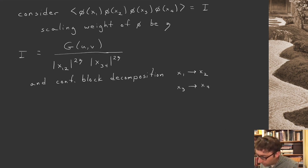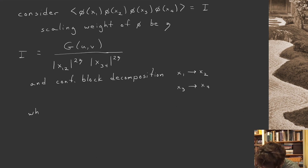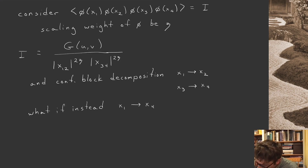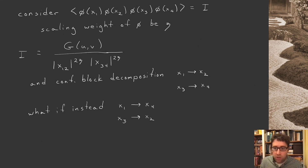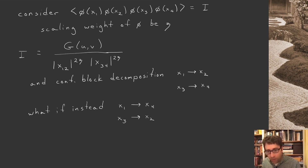There's a very natural question you could ask: we don't have to bring x1 close to x2. What if we brought x1 close to x4 and x3 close to x2 instead? We should get the same answer — the physics shouldn't depend on which decomposition we choose. This is the basic concept of crossing symmetry.